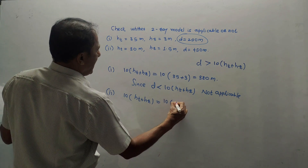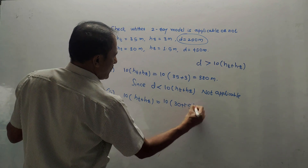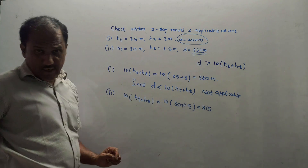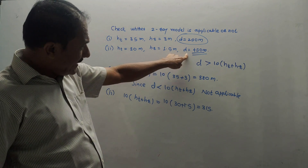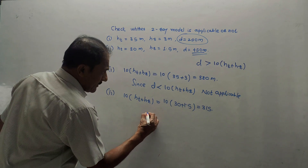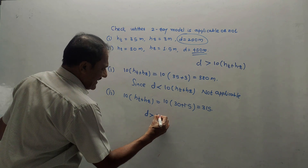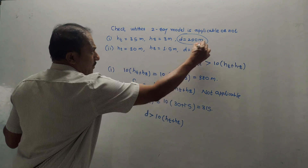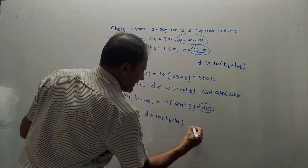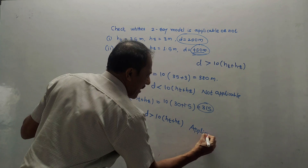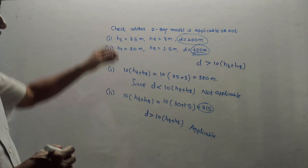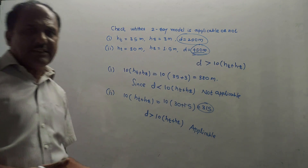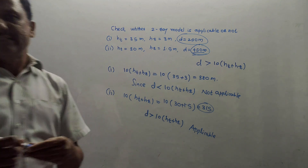For the second case, calculate 10 times (HT plus HR): 10 into (30 + 1.5) = 315. The given distance is 450 meters. Since 450 is greater than 315, D is greater than 10 times (HT plus HR), so the two-ray model is applicable. You just have to check this condition — if it is satisfied, the two-ray model is applicable.